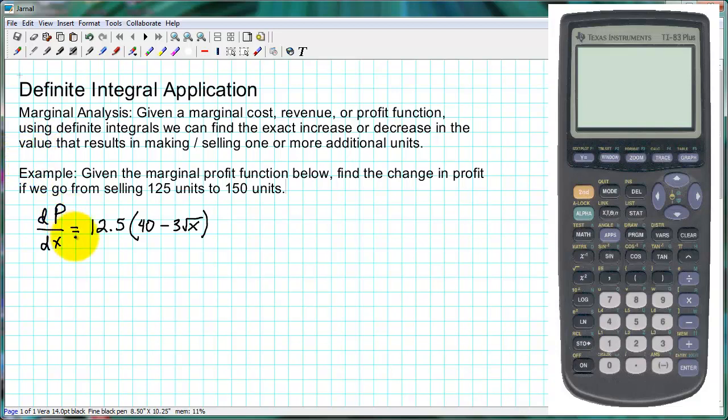In our particular problem here, we have a marginal profit function that's given here for some product. And we've maybe been selling at 125 units and we want to understand if we're able to increase our sales to 150 units. If this is our marginal profit function, how much would our profit change? Would it increase or decrease and by how much? Using integration we can get that exact number assuming that this marginal function accurately models our product.